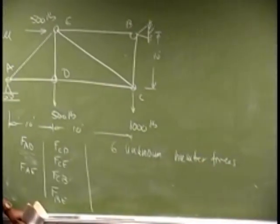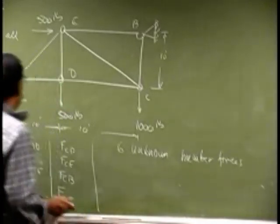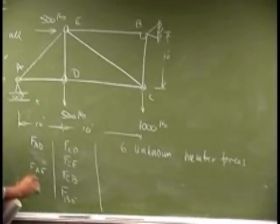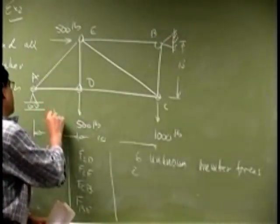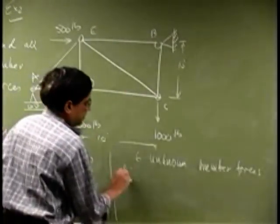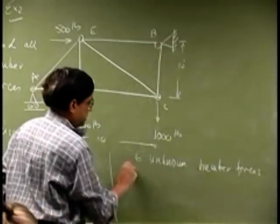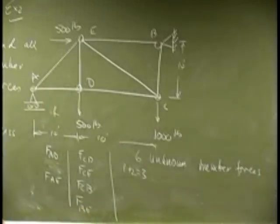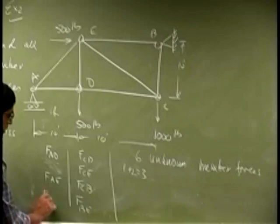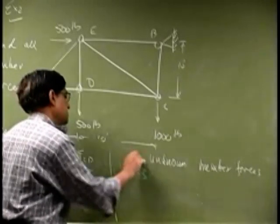There is one unknown per member, so six members, so you get six of those. Then there is a hinge here that gives you two reactions, and there is a roller here that gives you one. Then you get seven. Then you have a hinge here that gives you two plus three, and we should be missing one member which is FDE. So it's really now seven.